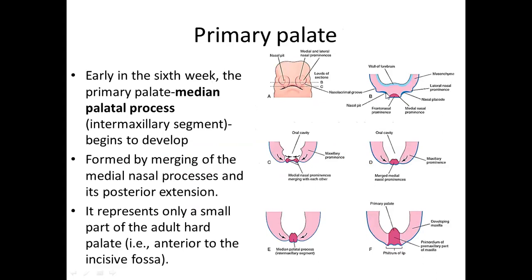Firstly, the formation of a primary palate. We are seeing the section taken at the nasal pits, bounded by the lateral and the median nasal processes. In the sixth week, the two median nasal swellings start approaching towards each other because of the proliferation of the maxillary prominence, which also starts approaching, compressing these median nasal prominences and resulting in their fusion into an intermaxillary segment. There will then be a posterior extension of this intermaxillary segment, forming a small part of the adult hard palate known as the primary palate. The intermaxillary segment also contributes to the philtrum of the upper lip.